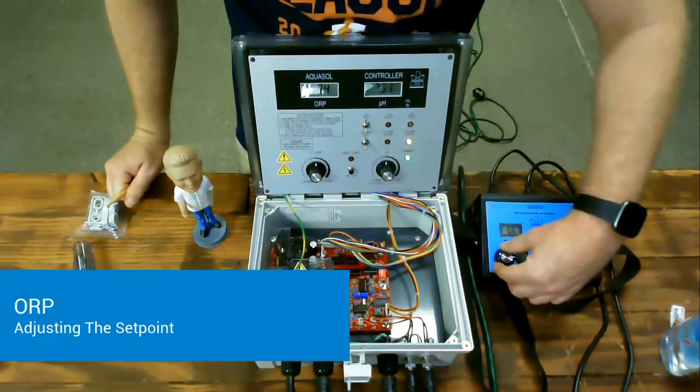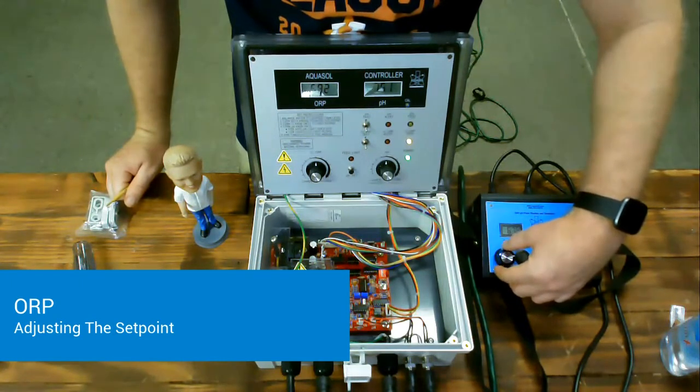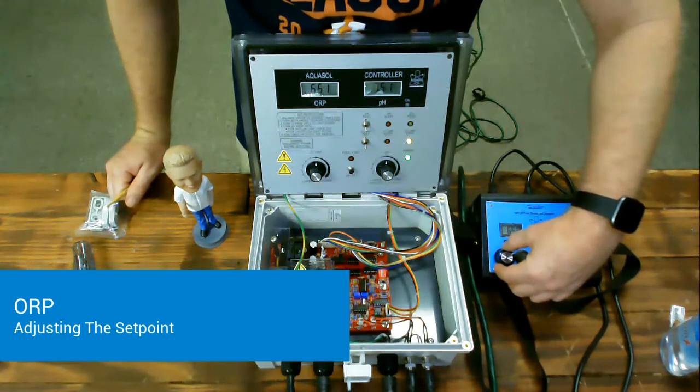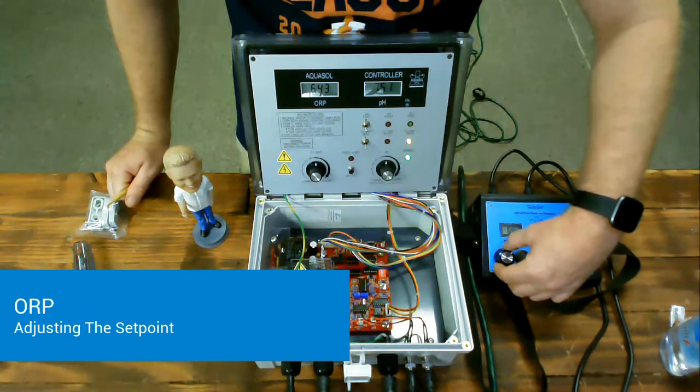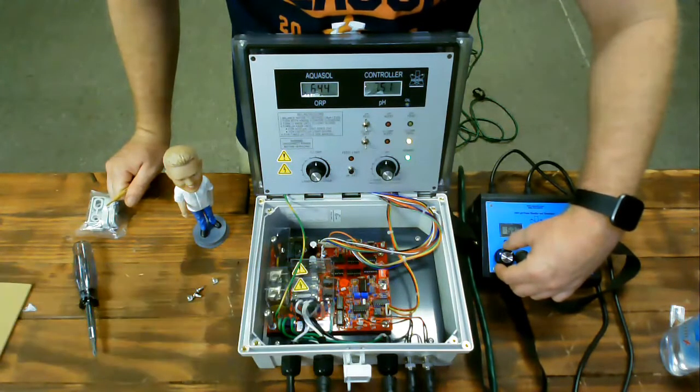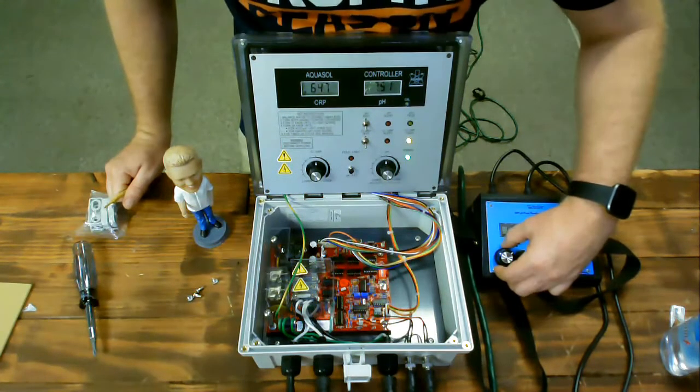So, here, I'll adjust the ORP millivolt signal from the signal generator to 640 millivolts, and then adjust the controller for it to turn on and off at that point.